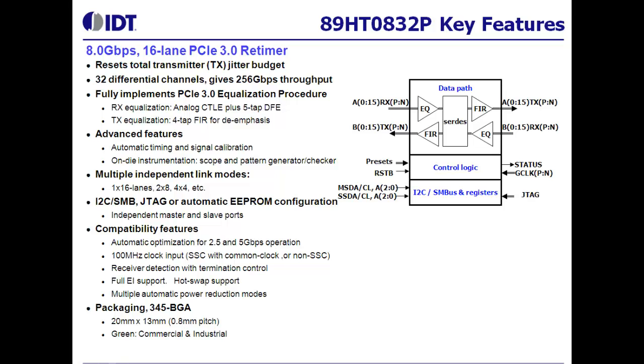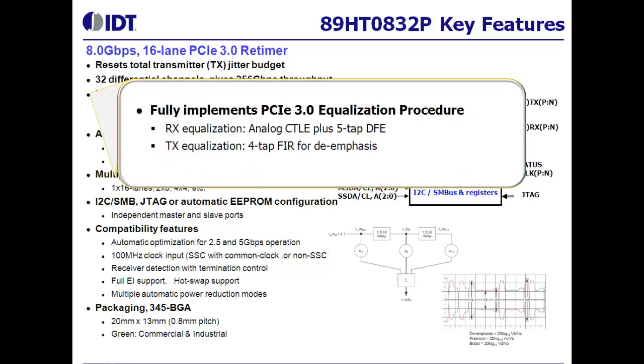The IDT T0832 retimer implements numerous state-of-the-art features around a CDR and SerDes core. Equalization is an essential function of any signal conditioner, and the T0832 implements a receiver stage with continuous-time linear equalizer followed by a 5-tap decision feedback equalizer. The transmit stage implements a finite impulse response filter to provide the new pre-shoot and boost levels as defined in the PCIe 3.0 standard.